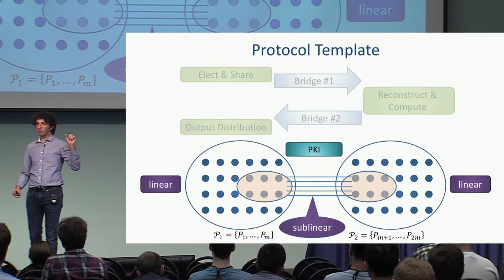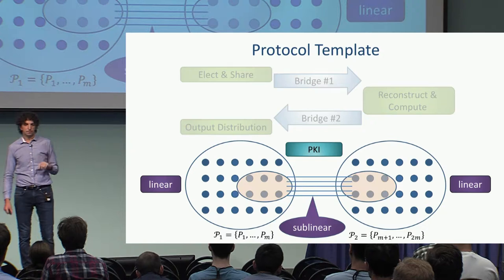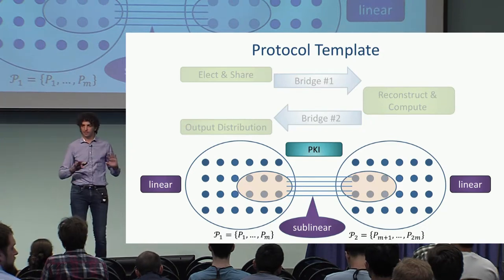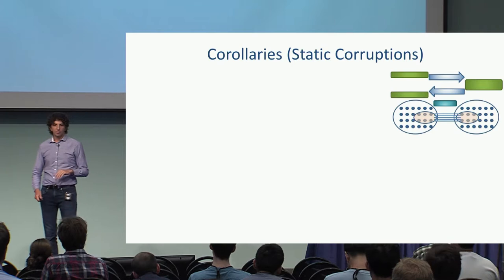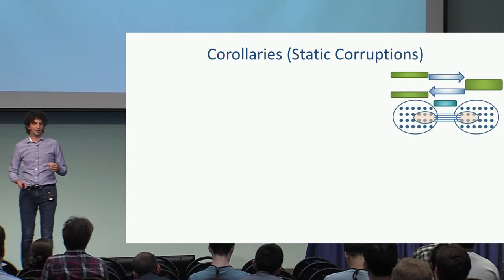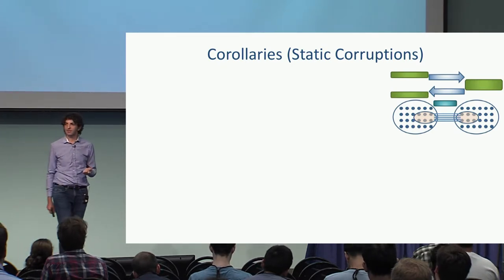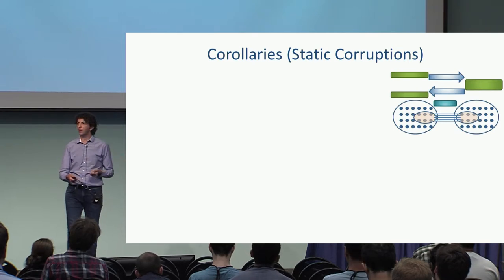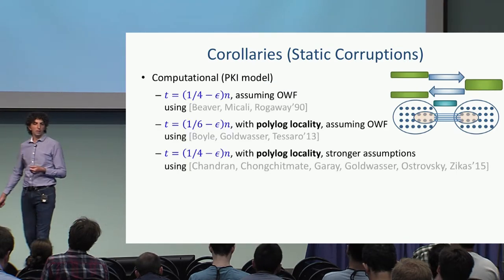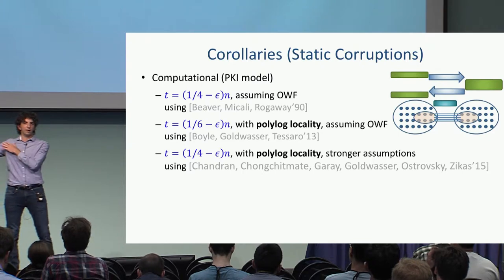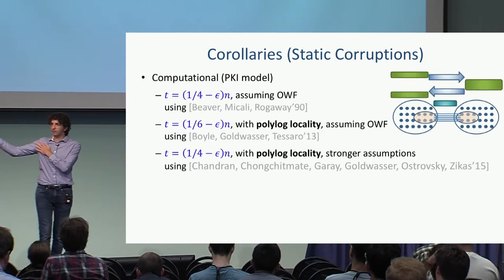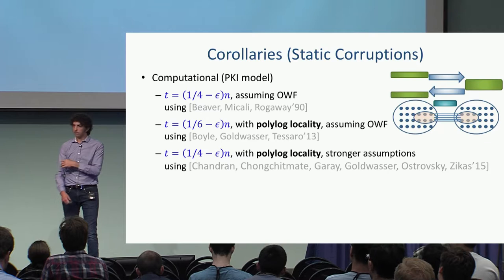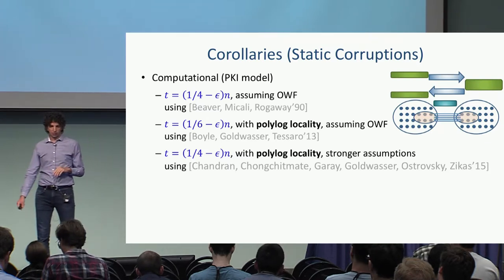So we have this layout of a graph with two linear-sized sets but a polylogarithmic cut — in a very strong sense, this is not an expander. We still need to instantiate those trusted parties, and using different protocols we get different results. Using the BMR protocol, we get the statement about static corruptions and computational security. Using the protocol of Boyle et al. or Chandran et al., we can get polylogarithmic locality and a non-expander graph.